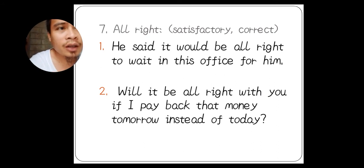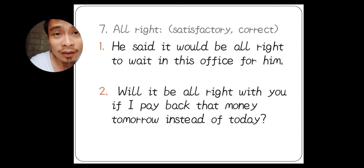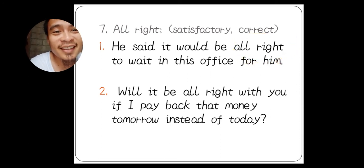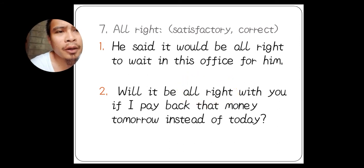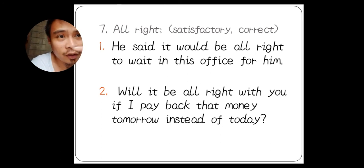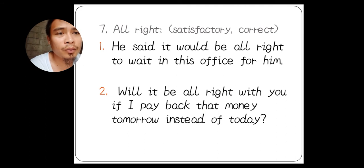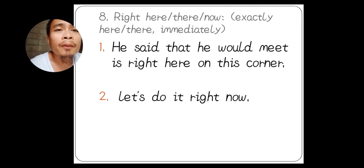Number seven: 'all right,' meaning satisfactory or correct. For example: 'He said it would be all right to wait in his office for him.' Another example: 'Will it be all right with you if I pay back that money tomorrow instead of today?' So 'all right' always means satisfactory or correct.